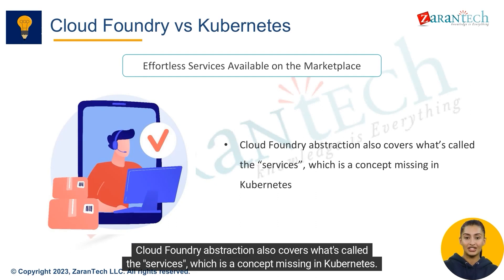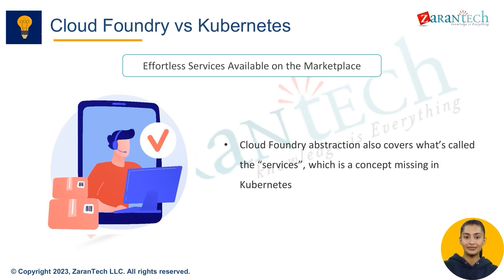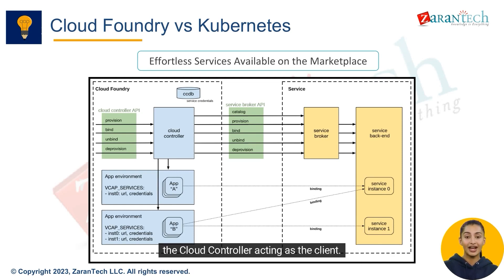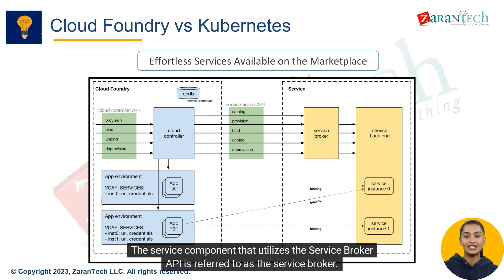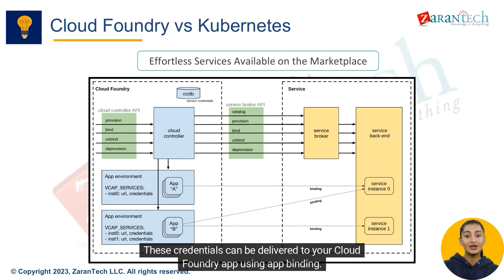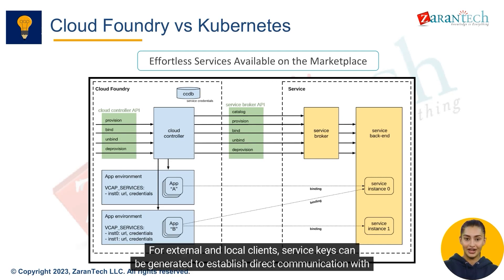Cloud Foundry's abstraction also covers what's called services — a concept missing in Kubernetes. Services are integrated with Cloud Foundry using the Service Broker API, with the Cloud Controller acting as the client. The component that utilizes this API is referred to as the service broker. Service instance credentials can be provisioned in Cloud Foundry to facilitate interaction with a service instance, and these credentials can be delivered to your app using app binding. For external and local clients, service keys can be generated to establish direct communication with a service instance.